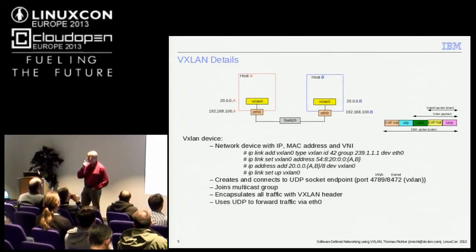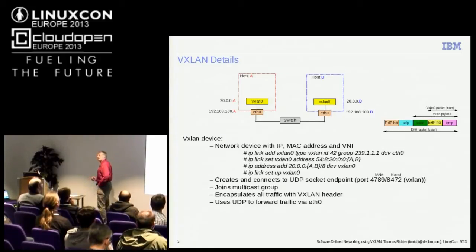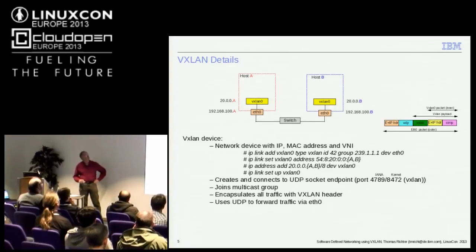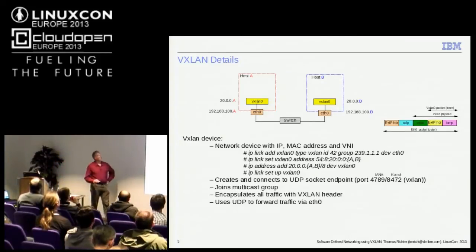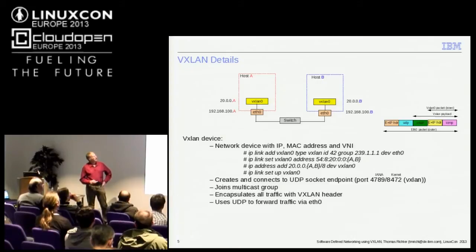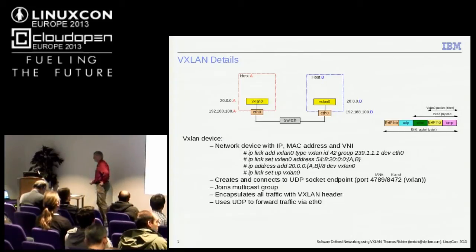The receiving side receives the encapsulated packet, takes out the header, does some checking, and moves it up to the receiving device driver instance. You can see the inner packet — for example, if we do a ping, we have this inner packet from the VXLAN device, a VXLAN header prepended, and then the outer packet for transmission over the IP infrastructure.